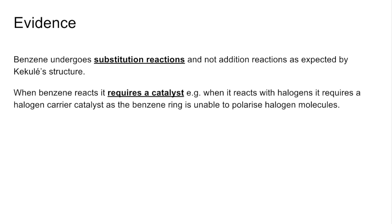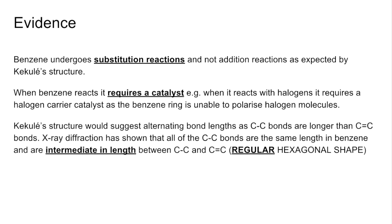Next thing I'm saying, when benzene reacts it needs a catalyst and then I'm giving an example. So when it reacts with halogens, it requires a halogen carrier catalyst because that benzene ring is unable to polarise halogen molecules.